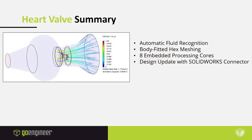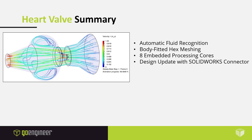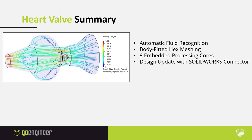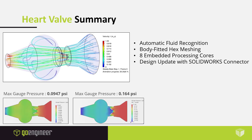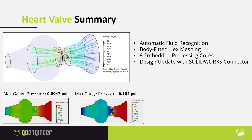To summarize the heart valve example, the fluid dynamics engineer role provides ease of use through automatic fluid recognition during analysis setup, and you can capture really complex geometry using the body-fitted hex meshing algorithm. Right out of the box, the software gives you about eight embedded processing cores on local machines to run analyses very quickly. The SOLIDWORKS connector lets you update designs seamlessly. We also showcased a comparison between an operational mode with lower gauge pressure versus a non-operational mode showing much higher gauge pressure as expected.